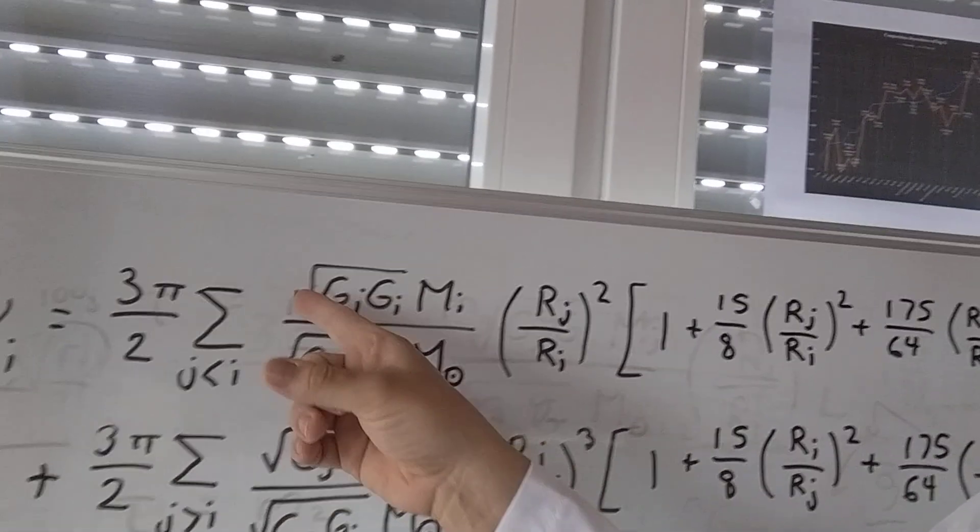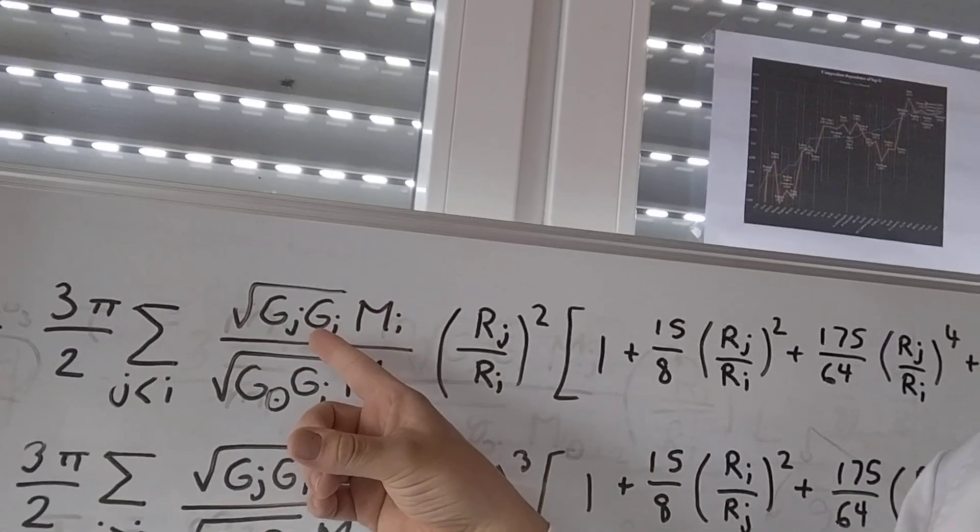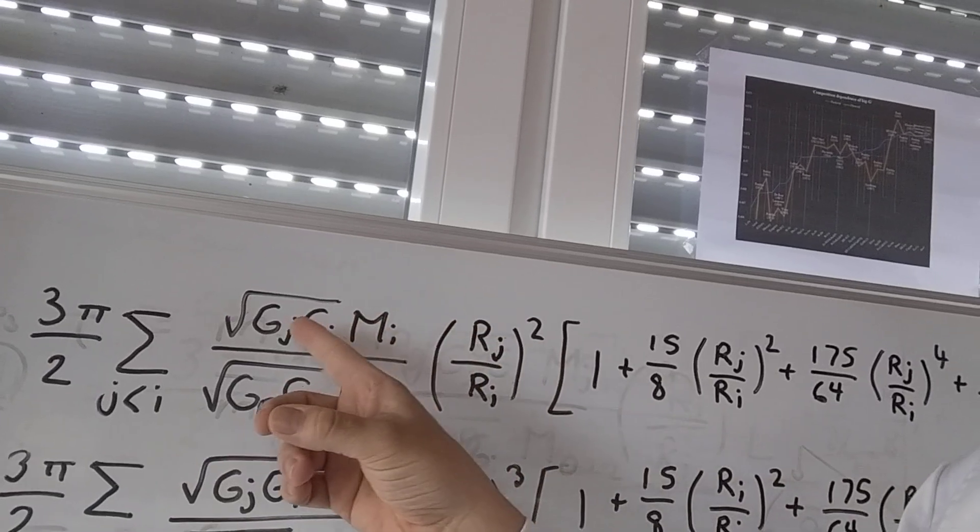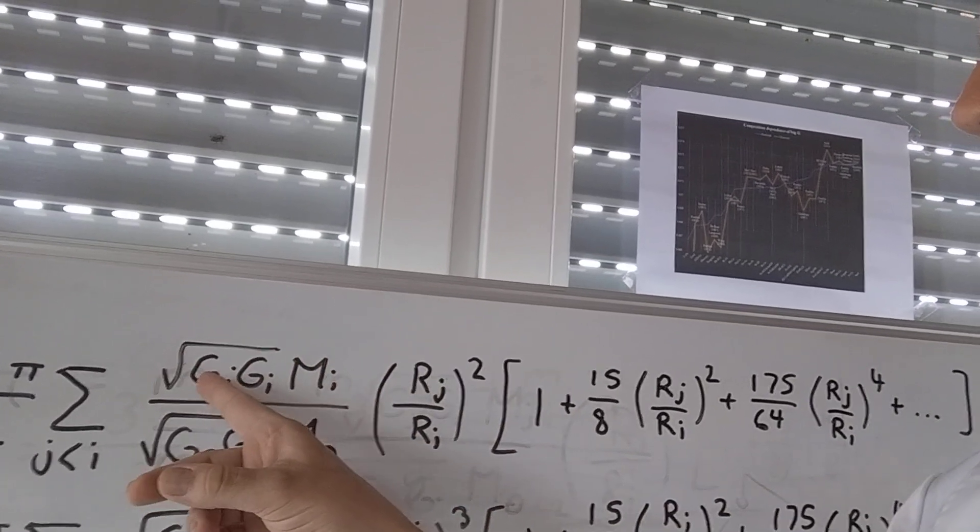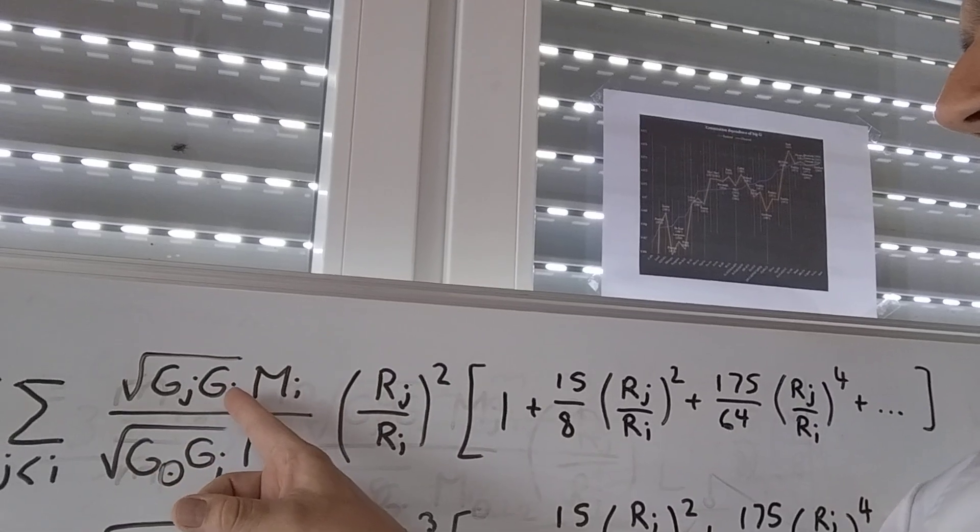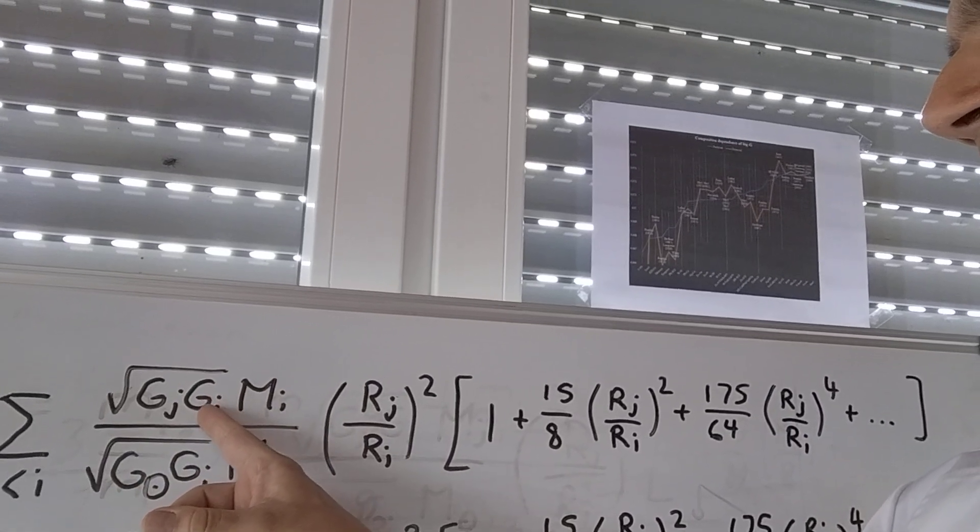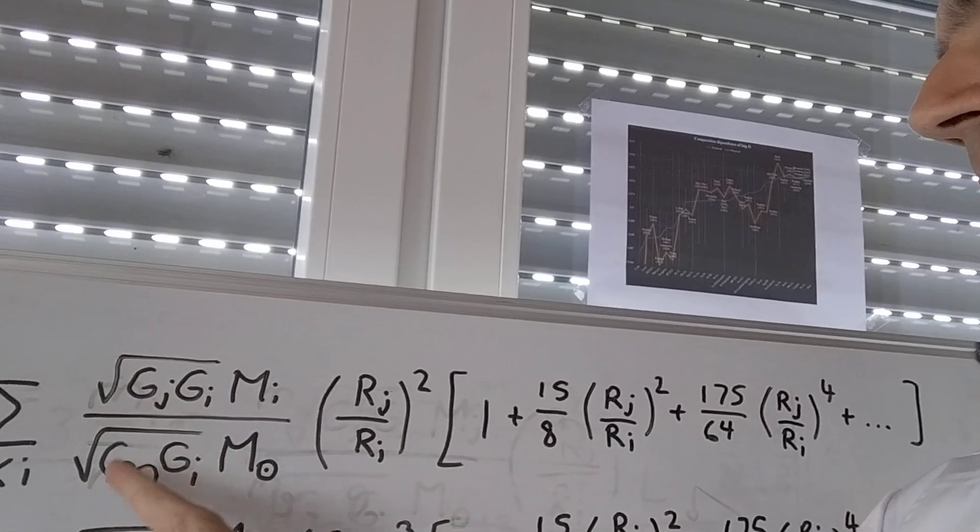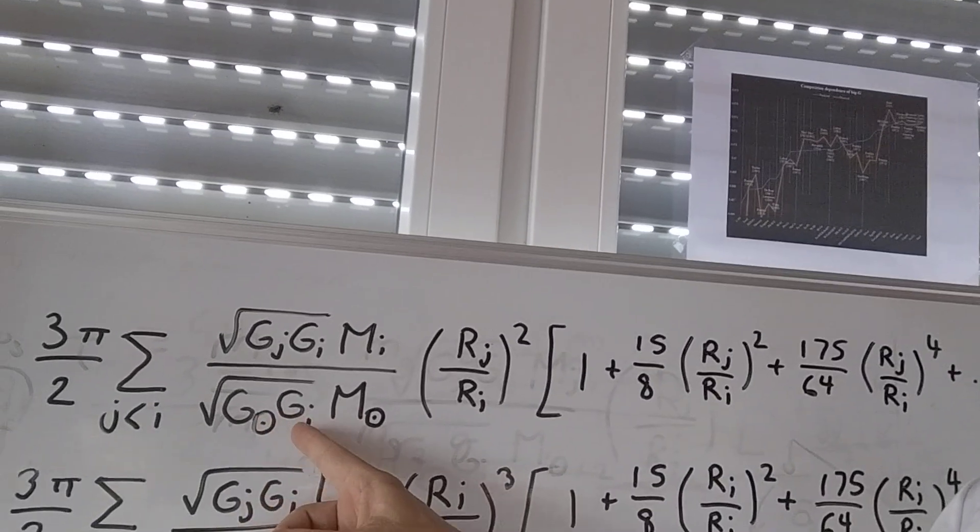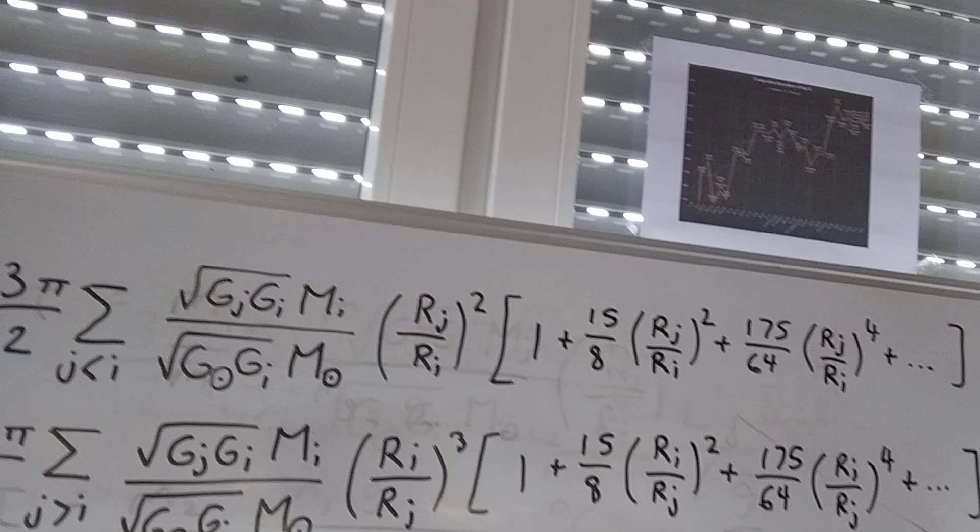But the effect is not so great because you're always dealing here with geometric means of G values. So here you have the geometric mean between the planet of interest and the influencing planet. And here also between the Sun and the planet of interest.